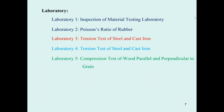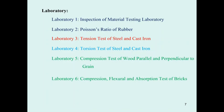Coming back to the laboratory list: labs one and two are the first set together. Lab three is the tension test of steel and cast iron — steel is a ductile material and cast iron is brittle, so we will see how they perform in tension. Lab four is the torsion test of steel and cast iron. Lab five is the compression test of wood — one parallel to the grain and one perpendicular to the grain — because wood has different properties in each direction. Lab six is the compression and fracture test of brick, and lab seven is the compression test of concrete.